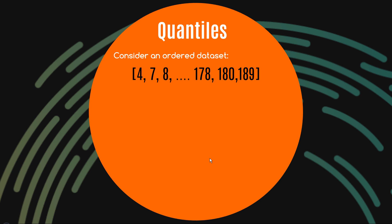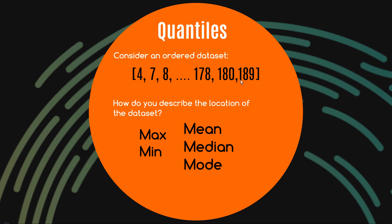To think about quantiles, let's first consider an ordered data set — going from smallest to largest. Let's consider how we describe the location of this data set, or the central tendency. You could say the maximum is 189, the minimum is 4. You could also describe the mean, the median — which is the middle number — and the mode, which is the number with the highest frequency.